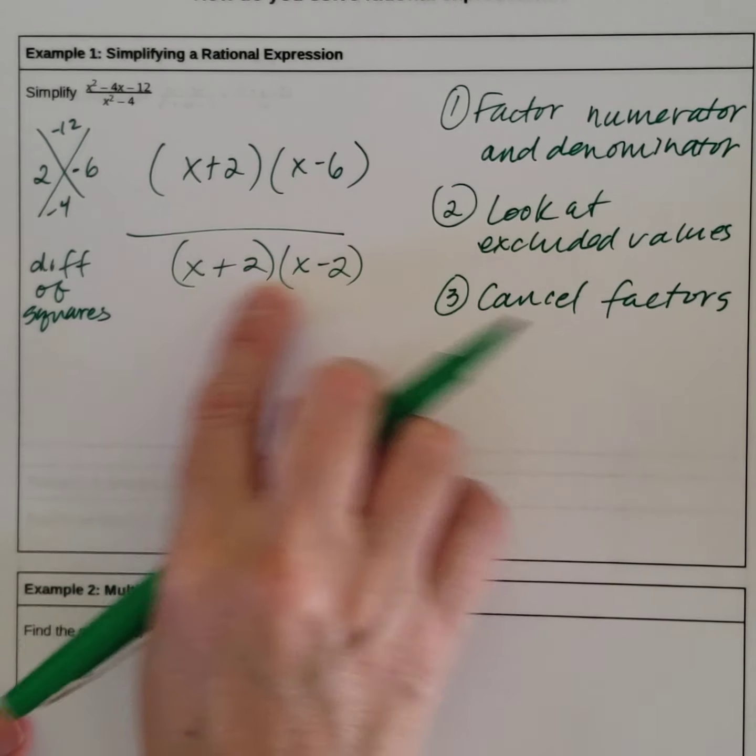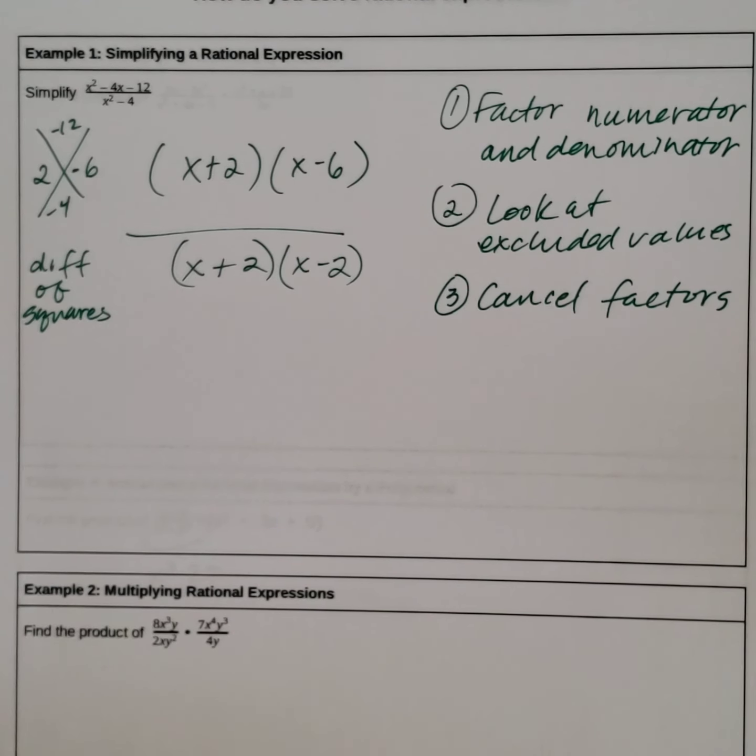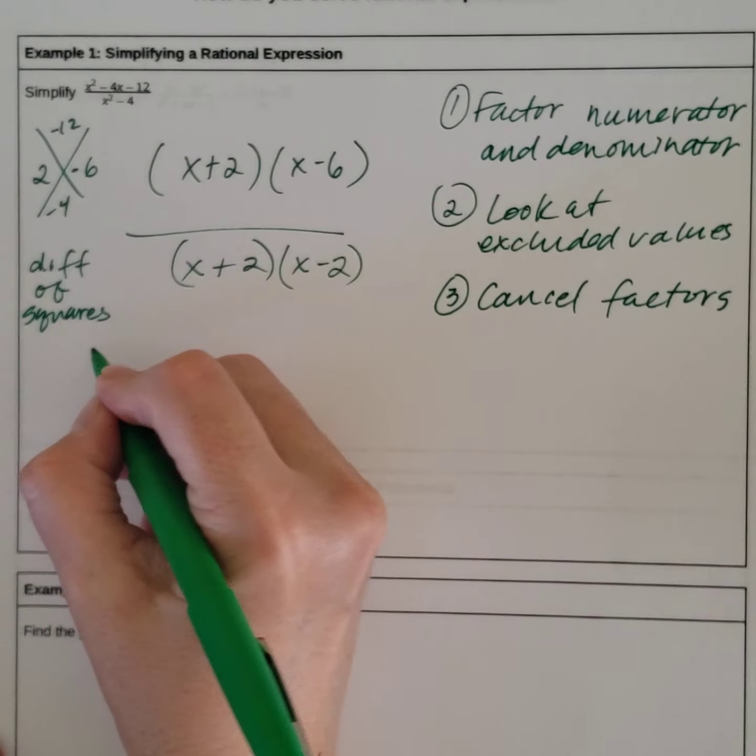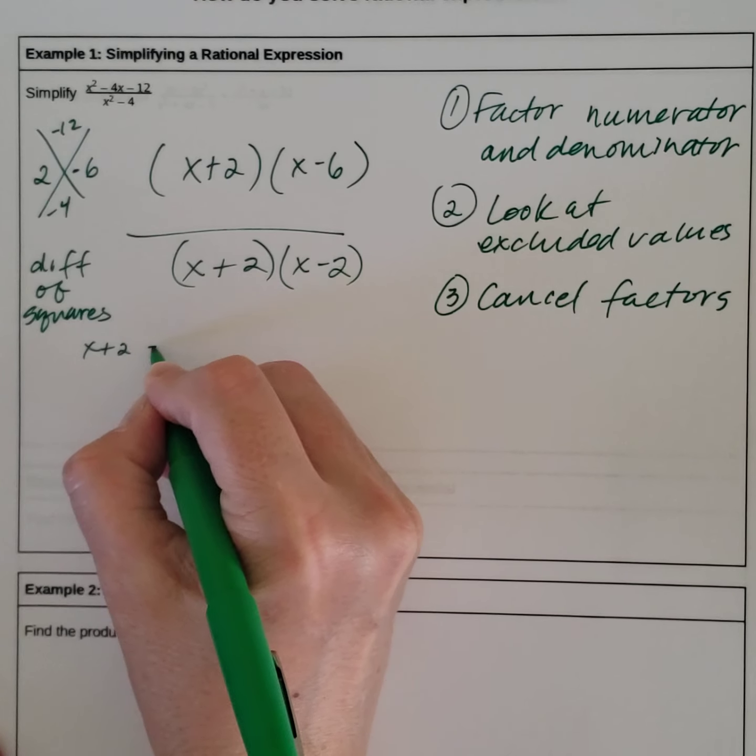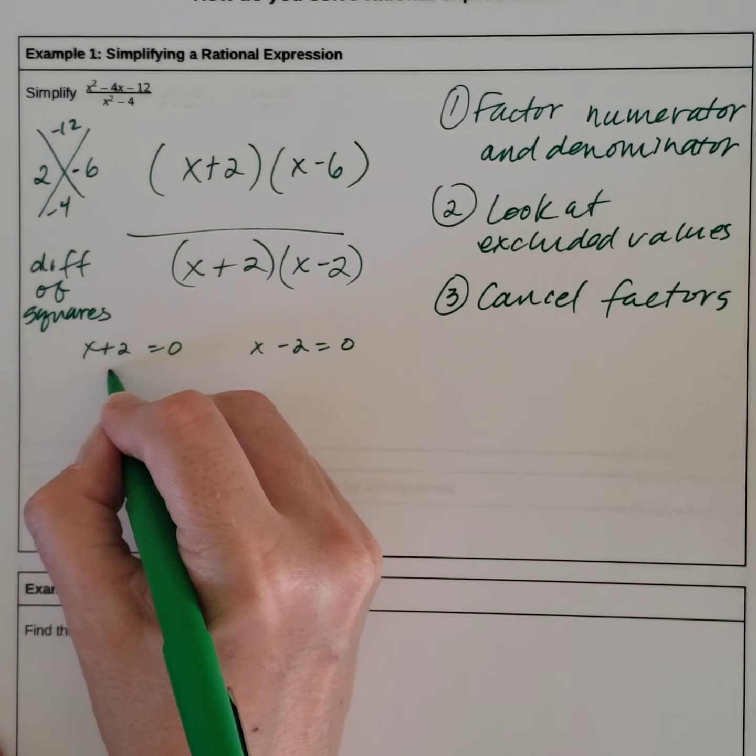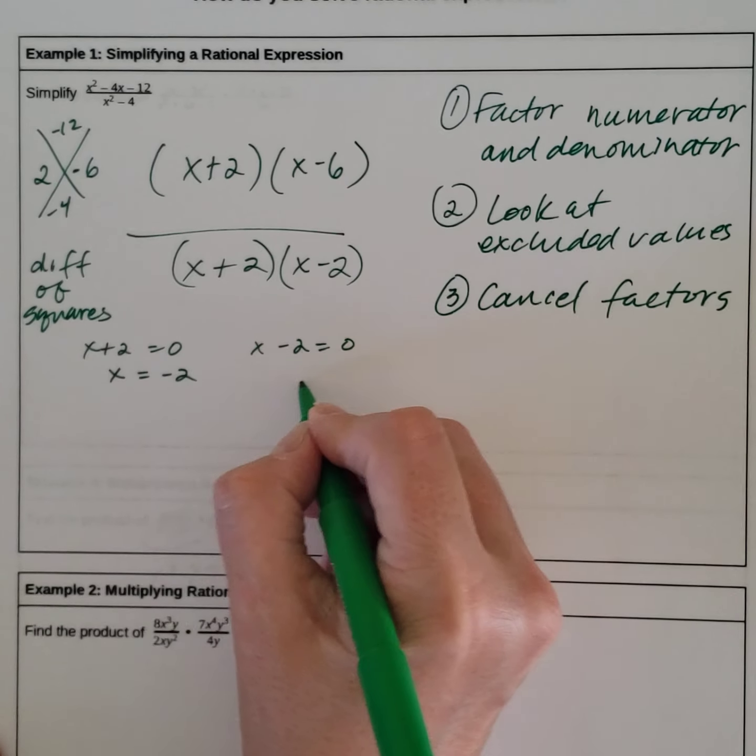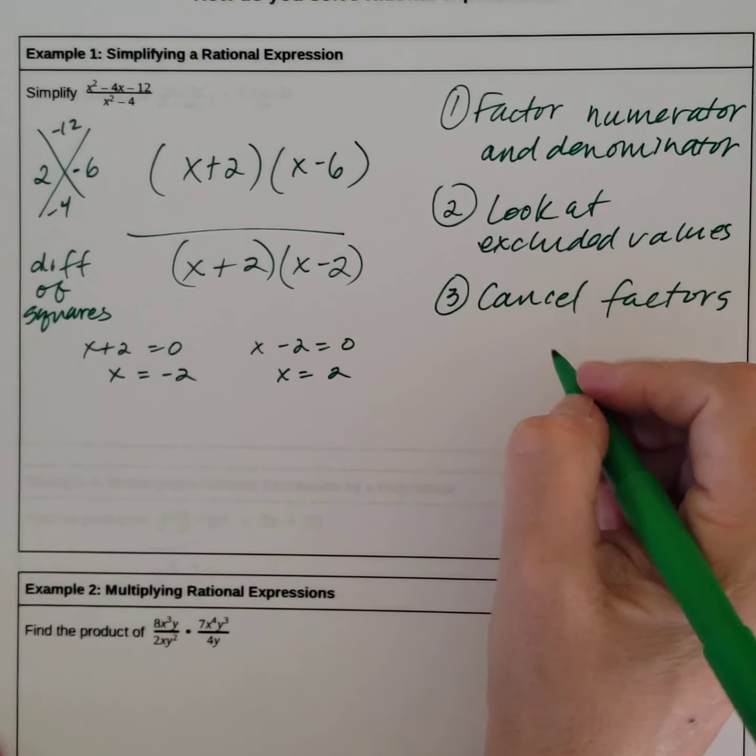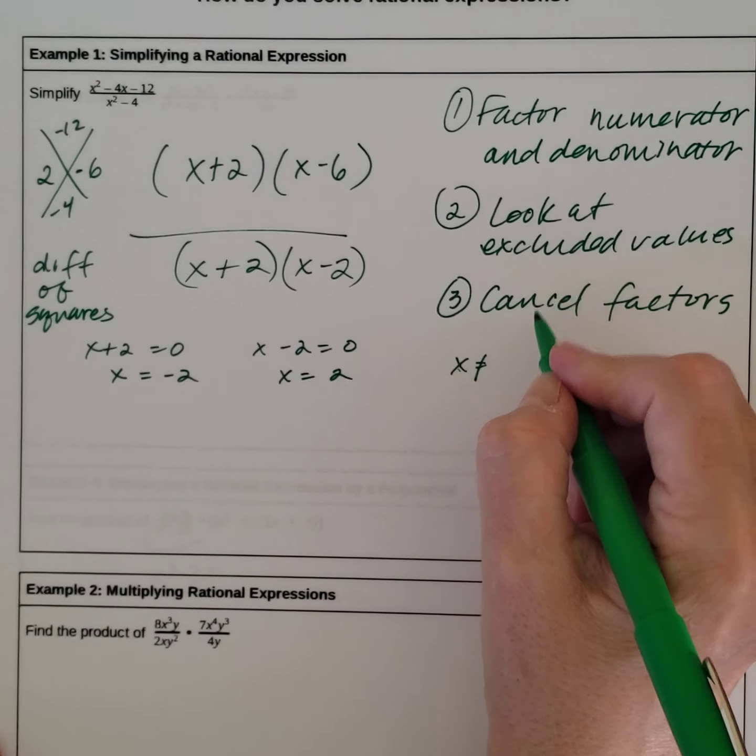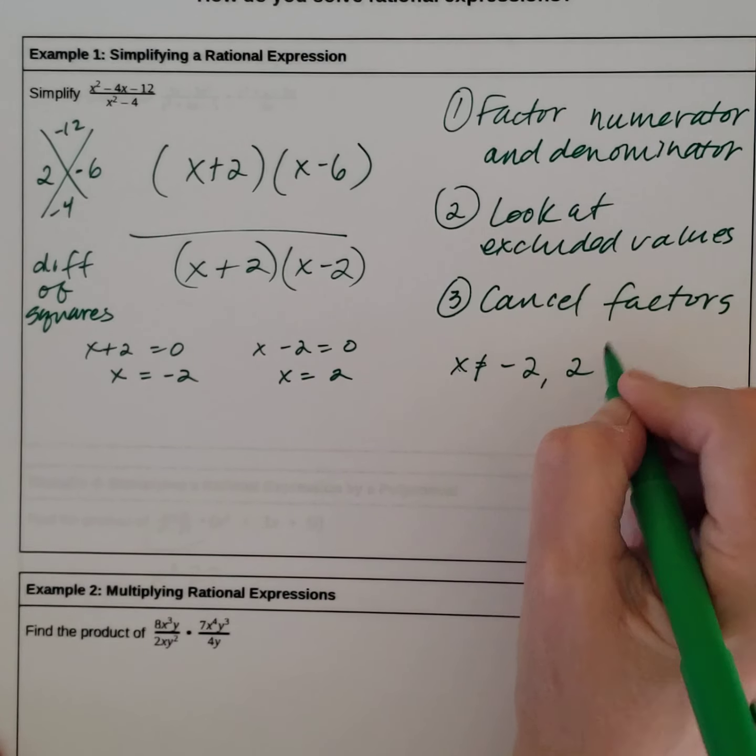Now we have to look at the denominator. We don't want 0 in the denominator because then we won't have anything occurring at that place. So we need to look at each of these factors and set them equal to 0. So we have x plus 2 equals 0, x minus 2 equals 0. That gives us x equals negative 2, x equals positive 2. So excluded values: x cannot be equal to negative 2 and positive 2.